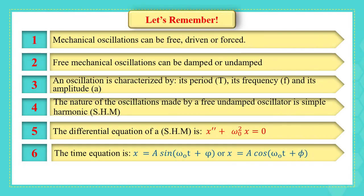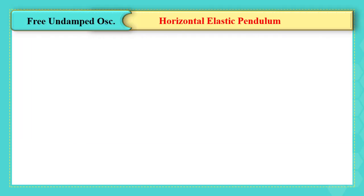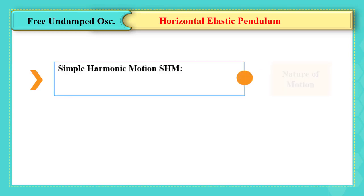Before we start, remember what we have taken in the previous videos. When we ask about the nature of motion, the answer could be simple harmonic motion, uniform rectilinear motion, uniformly accelerated rectilinear motion, etc. So simple harmonic motion is an answer to the question about the nature of motion.